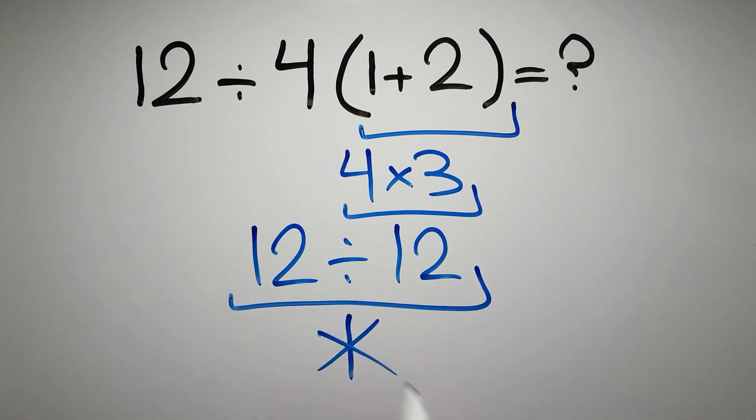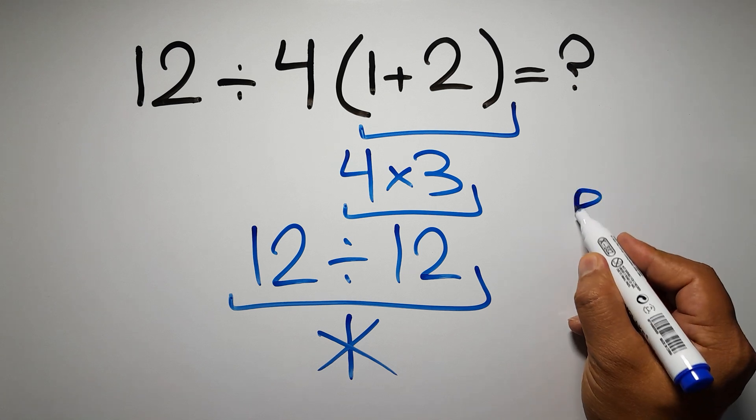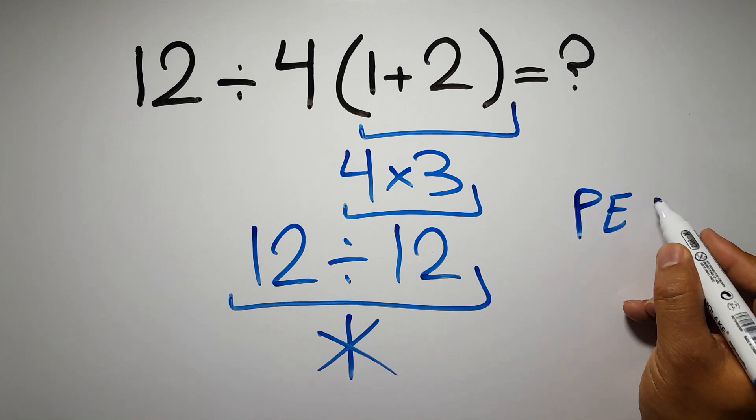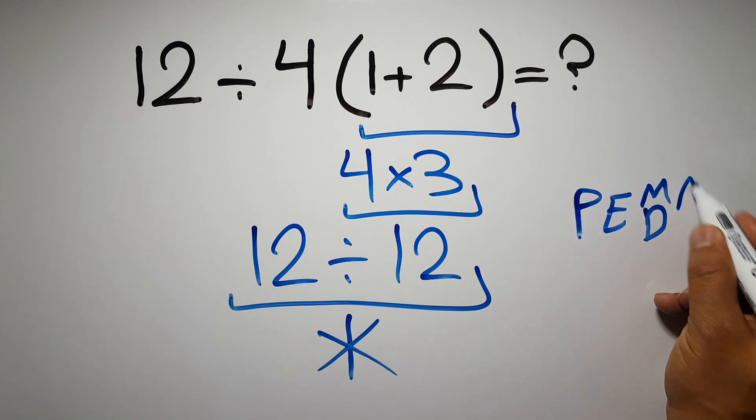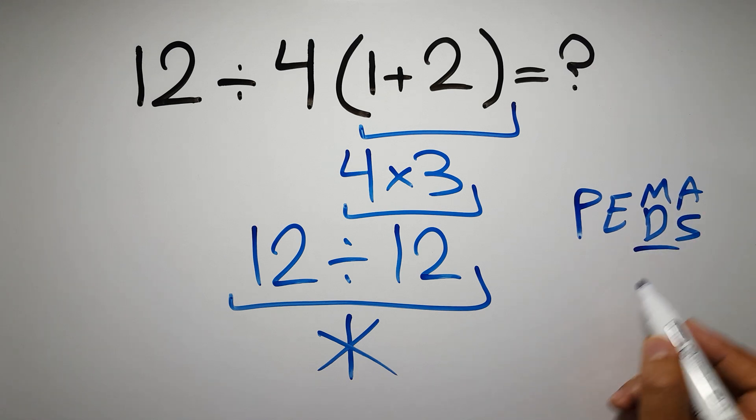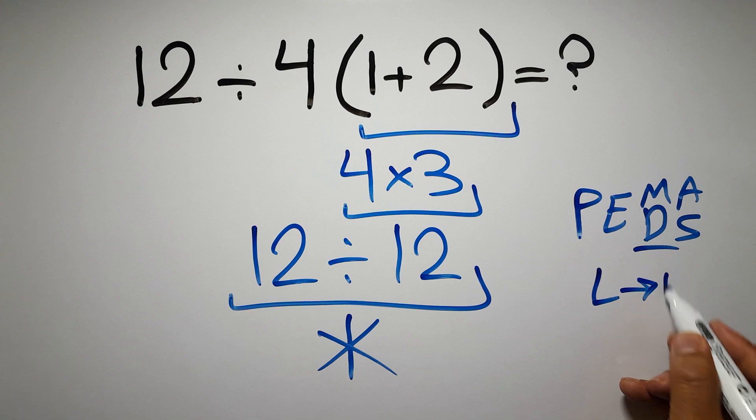But this answer is not correct, because according to the order of operations, first we have to do parentheses, then exponents, then multiplication or division, and finally addition or subtraction. Remember that multiplication and division have equal priority, and we have to work from left to right, and the same applies to addition and subtraction.